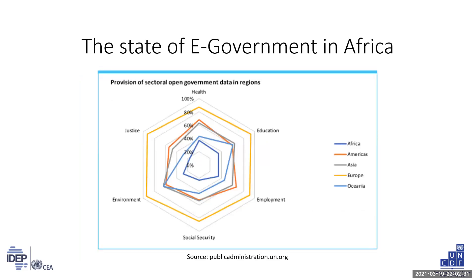E-data allows governments to increase their productivity, accountability, and inclusivity, as well as that of society as a whole. Many countries in Africa are moving towards policies that facilitate or impose analysis of government data, sharing of government data to improve intra- or interagency coordination and collaboration, and transparency of government data to improve accountability for government action.